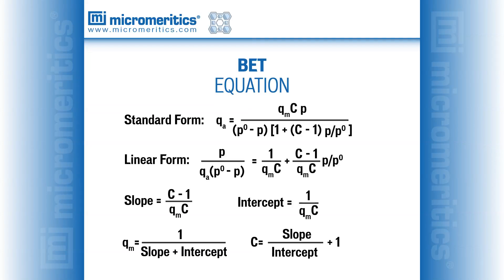The method of Brunauer, Emmett, and Teller, commonly known as the BET method, is the most widely used method for estimating surface area.